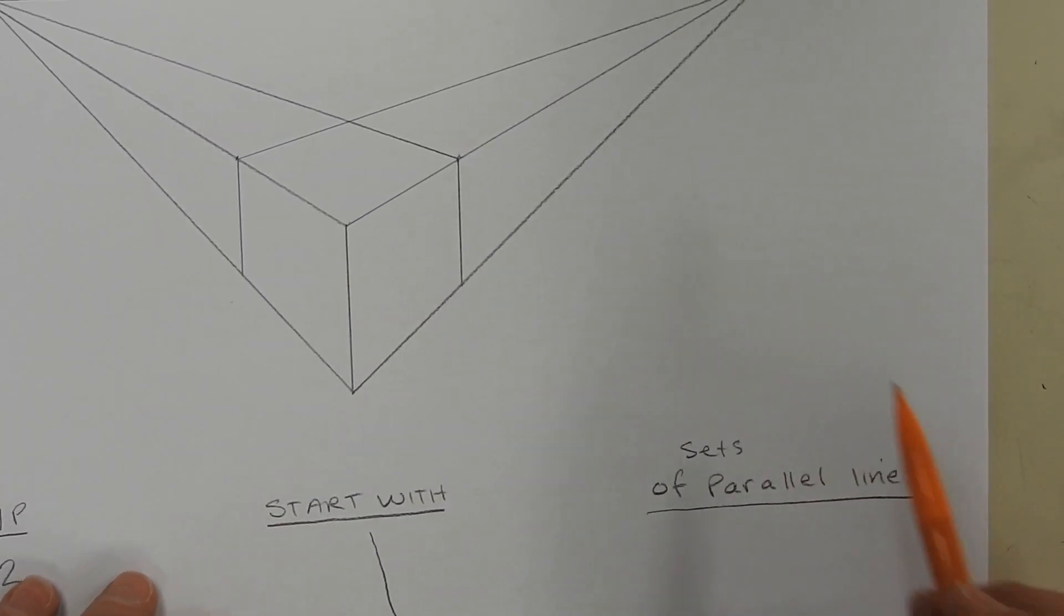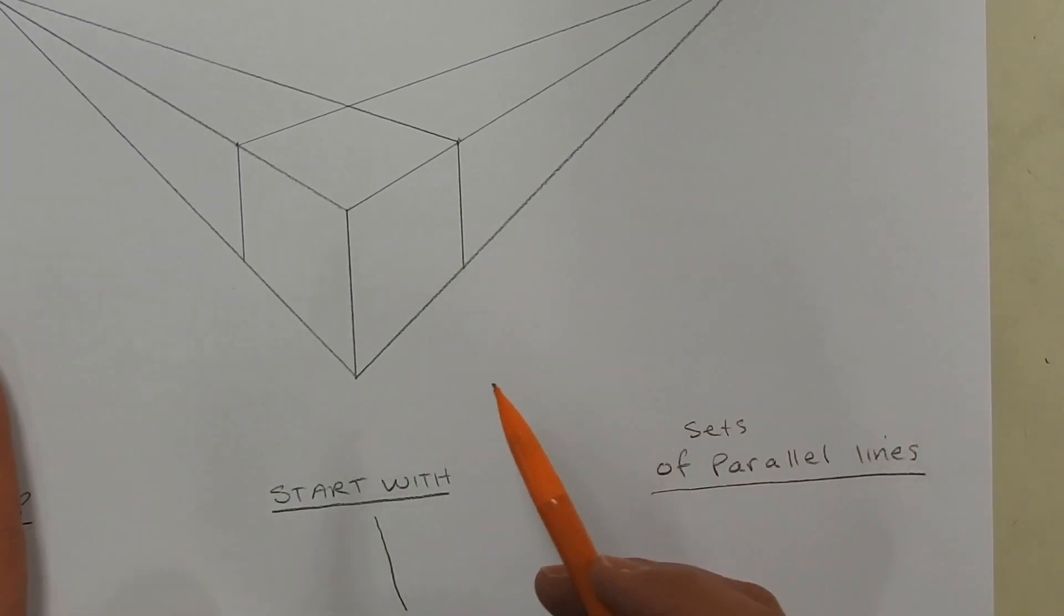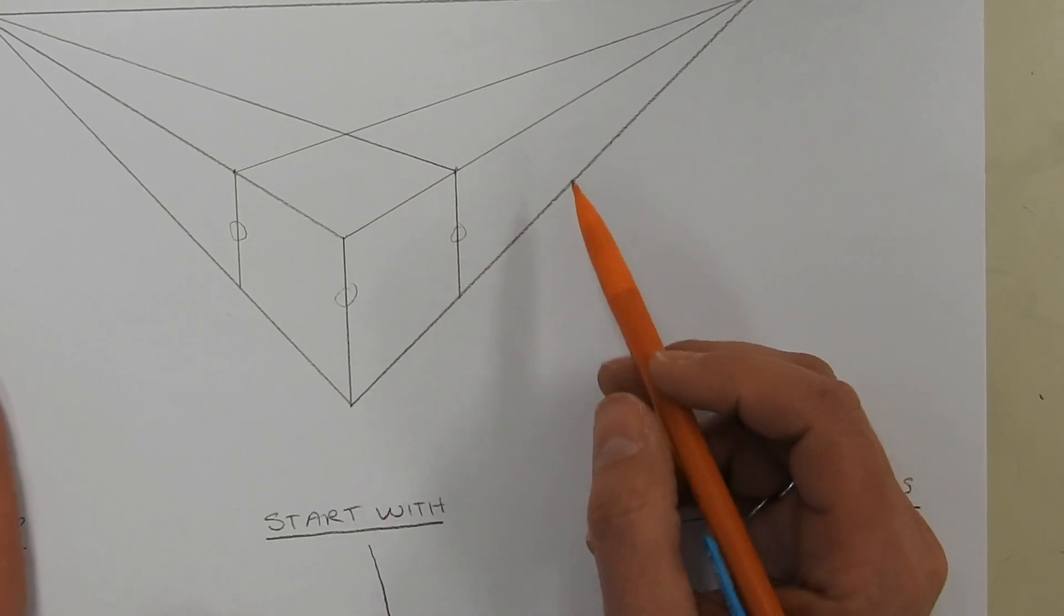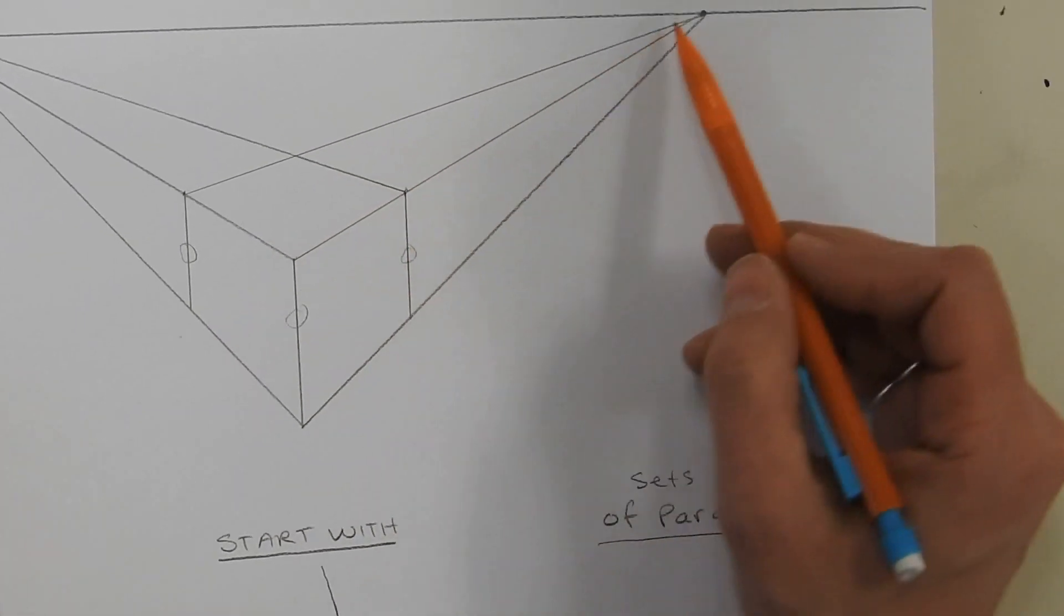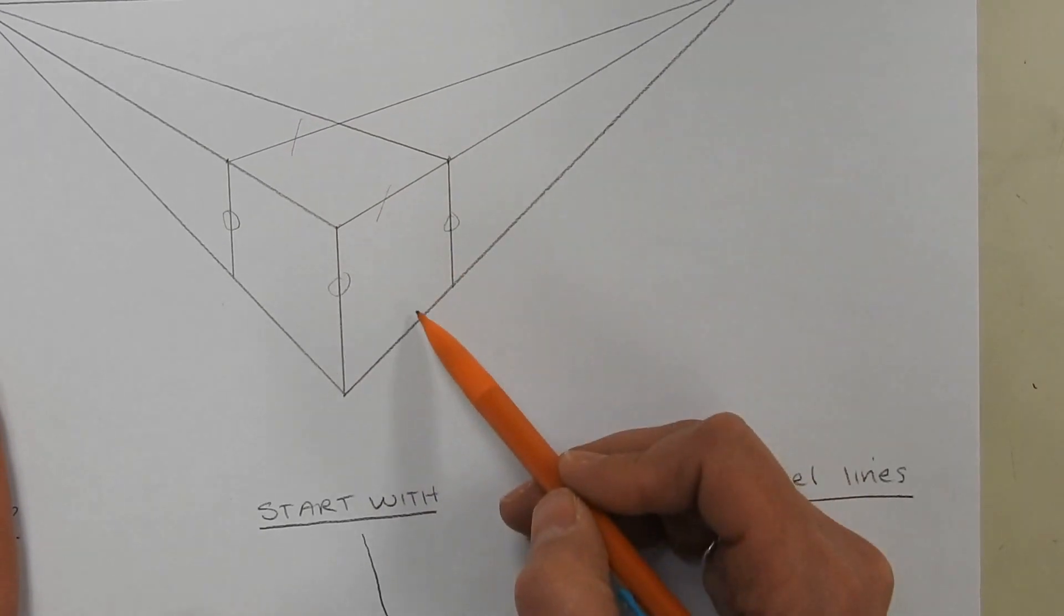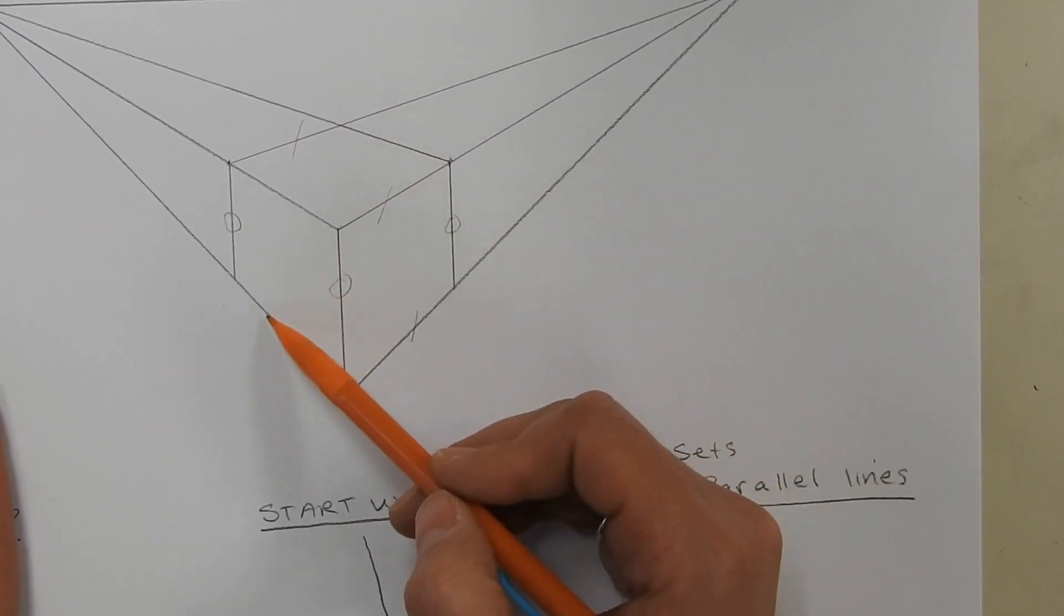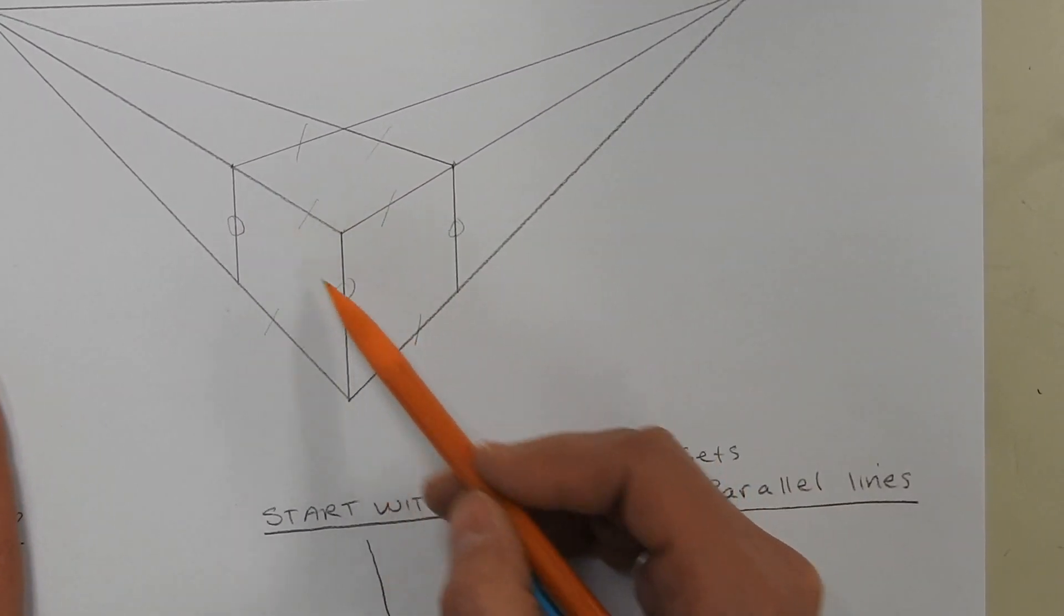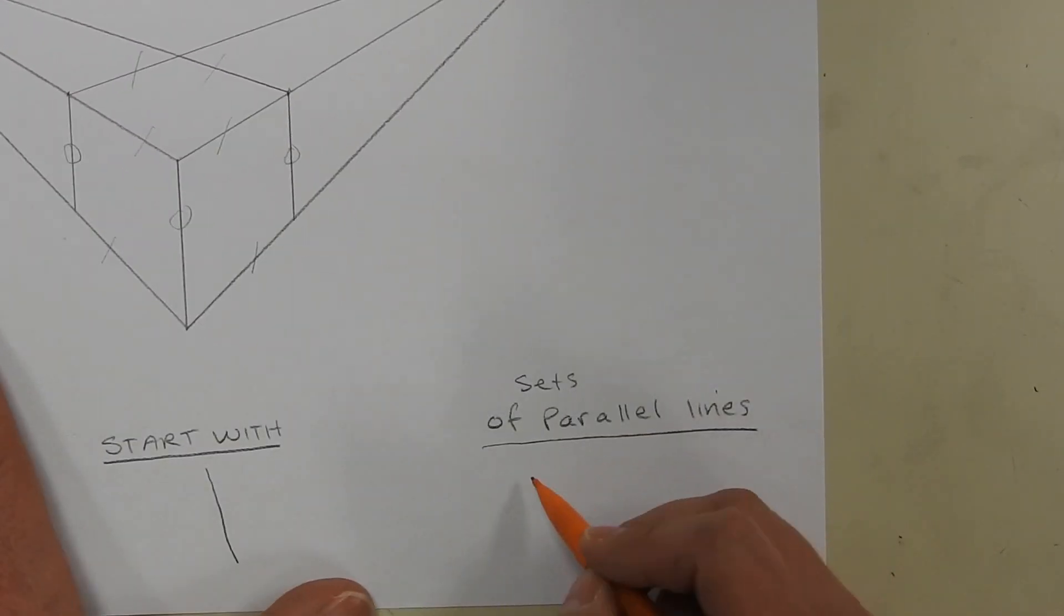And then if we take a look at our sets of parallel lines, we can see there's one set right here. However, this set right here converges, so those are not parallel. And this set right here also converge to that vanishing point. So there's only one set of parallel lines.